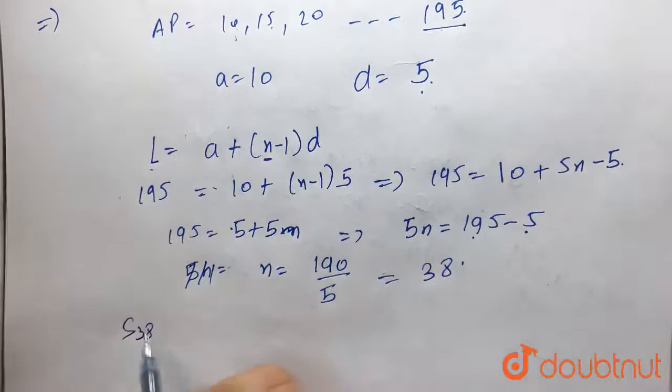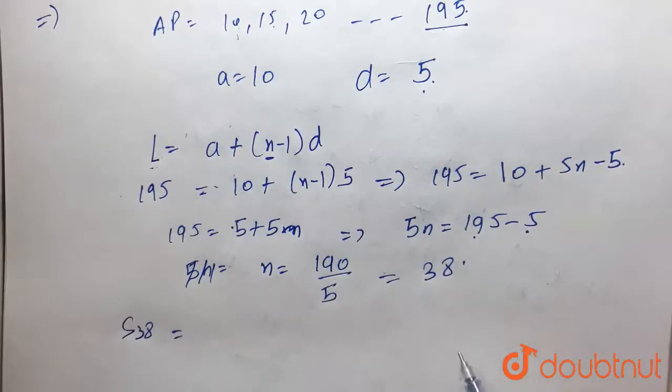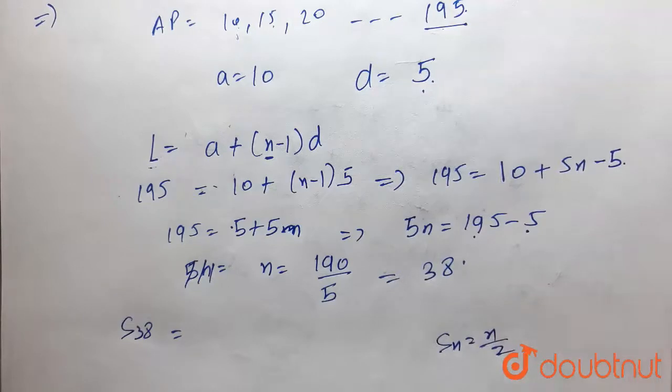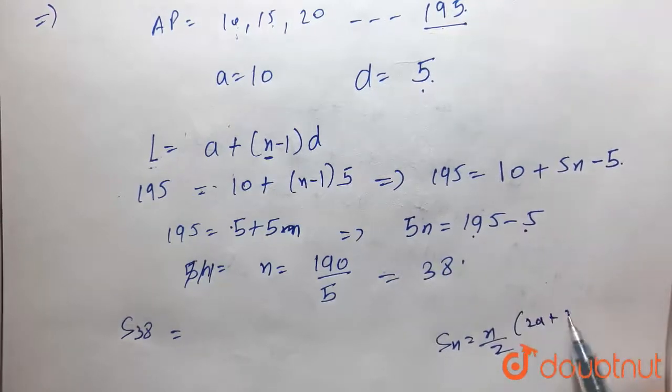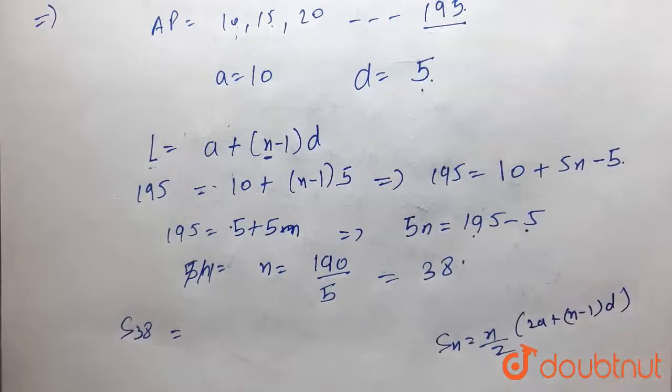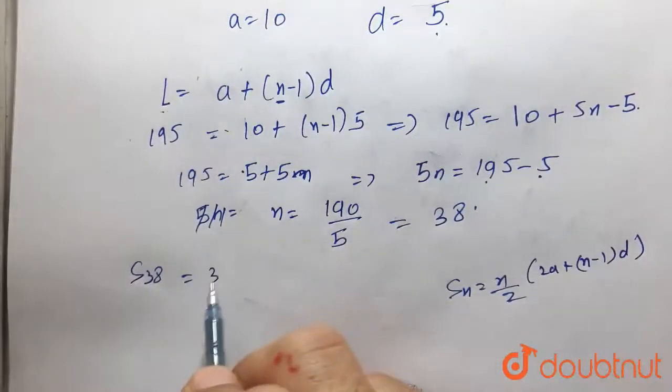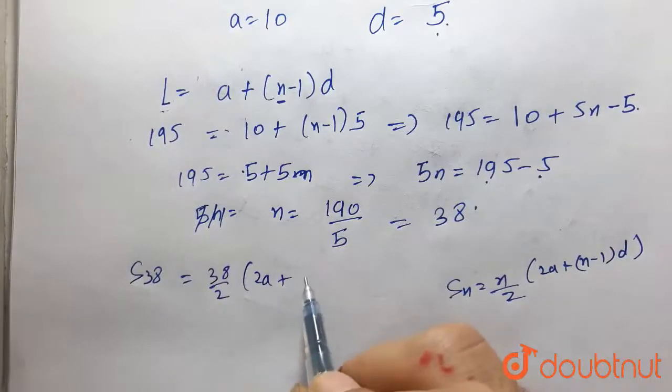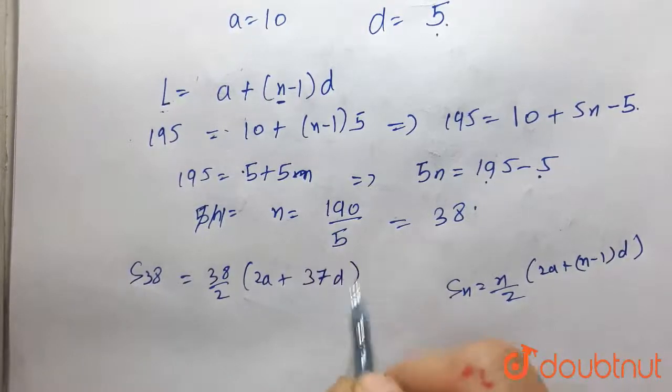So S38 is equal to - here we are using the formula Sn is equal to n by 2 into 2a plus n minus 1 into d. So S38 becomes 38 by 2 into 2a plus 38 minus 1, that is 37, into d.